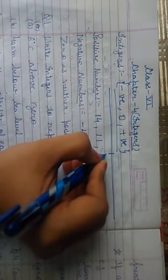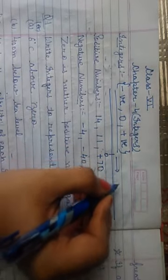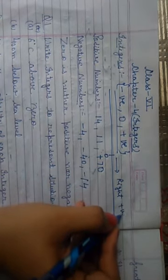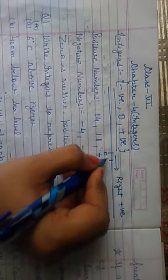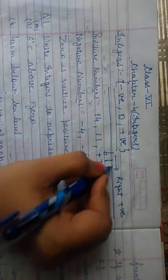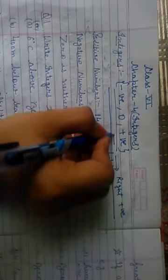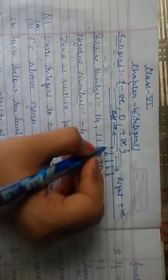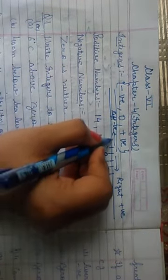Ab integers ki presentation kya hoti hai? Integers ke bilkul center mein zero hota hai. Zero se jab hum right side ko move karte hain, then we get the positive numbers: plus one, plus two, plus three and so on. Zero se jab hum left side move karte ho, then you will get negative numbers — minus one, minus two, minus three and so on.